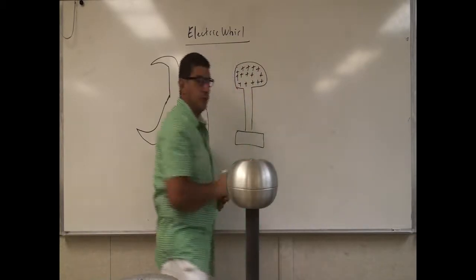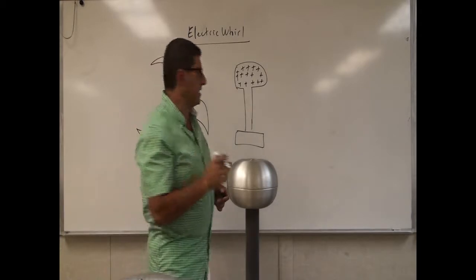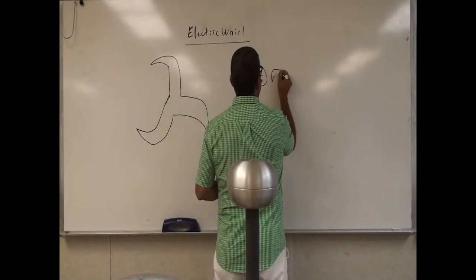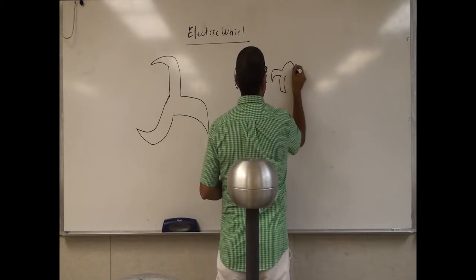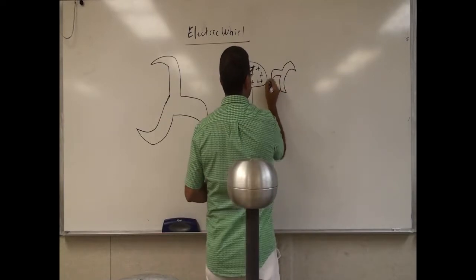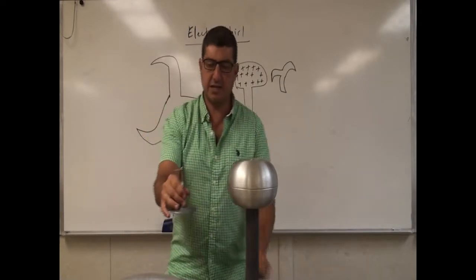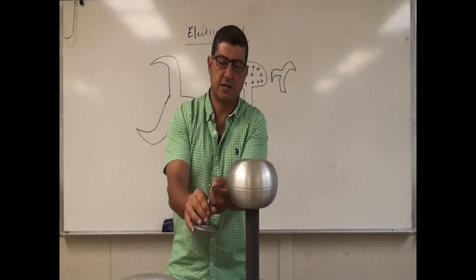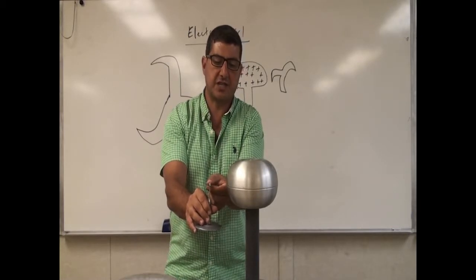So what will happen when I bring the electric world next to it? At first, if you bring it so that the pointy edge is parallel to the generator — if this side is horizontal — you will see that nothing really happens. So it just kind of stays there.